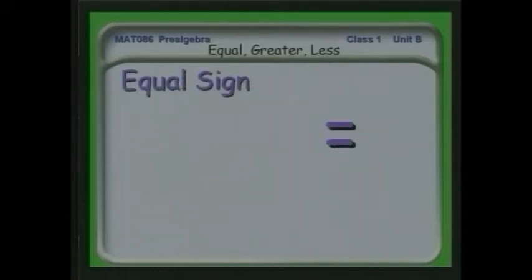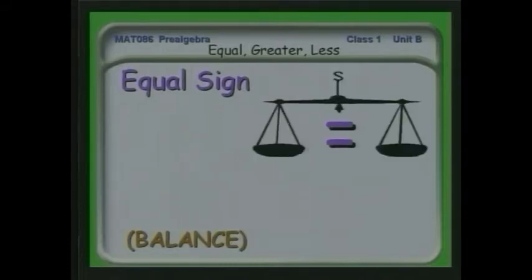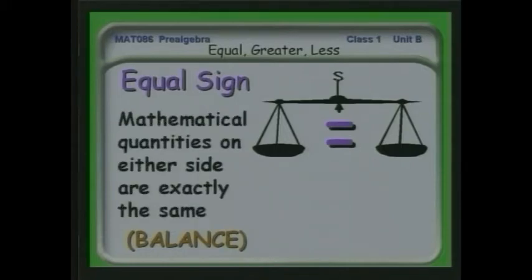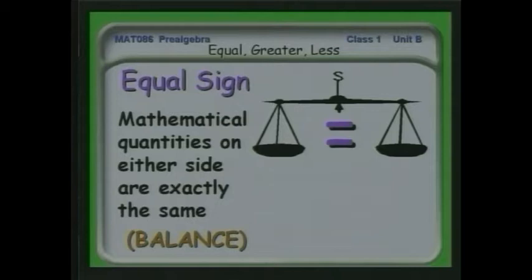We also talk about an equal sign. That's a very important thing, because you can think of a balance. That equal sign in mathematics is equivalent to the balance. When you see it in math, you are making a very strong assertion that things on one side of that equal sign are exactly similar to things on the other side — they're effectively identical. And by making that assertion, you can do some very powerful things.